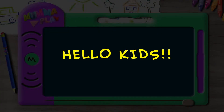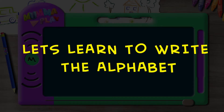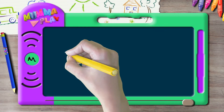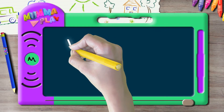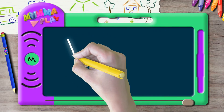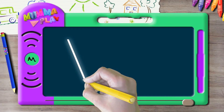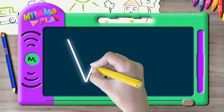Hello kids, welcome to Mama Play. Let's learn to write the alphabet. Today we'll learn how to write the letter B. For the capital B, we'll start with a slant line from the top to the bottom, then continue